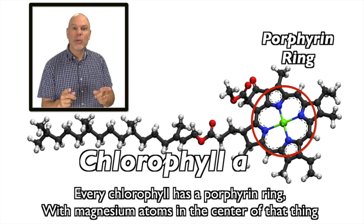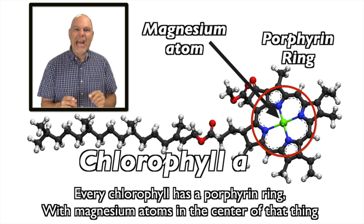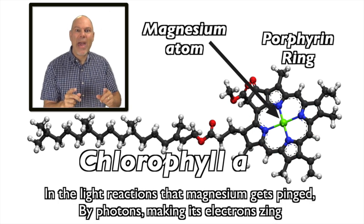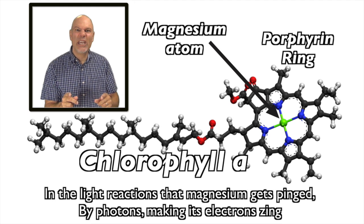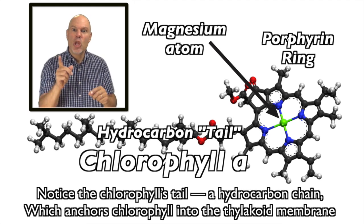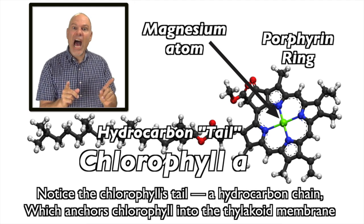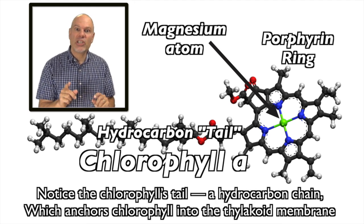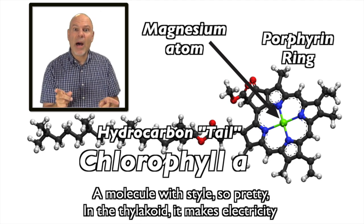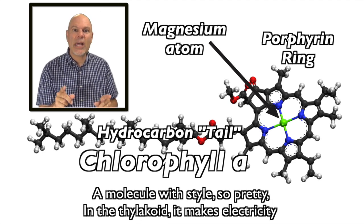Every chlorophyll has a porphyrin ring with magnesium atoms in the center. In the light reactions, that magnesium gets pinged by photons, making its electrons zing. Notice the chlorophyll's tail — a hydrocarbon chain which anchors chlorophyll into the thylakoid membrane, a molecule of style so pretty in the thylakoid, it makes electricity.